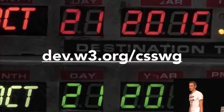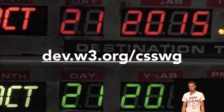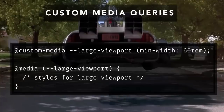Meanwhile the W3C worked on a lot of stuff like custom properties — we have variables right now usable in Firefox — and we can make some math too. We'll have some custom media queries soon, in the next version of Internet Explorer.